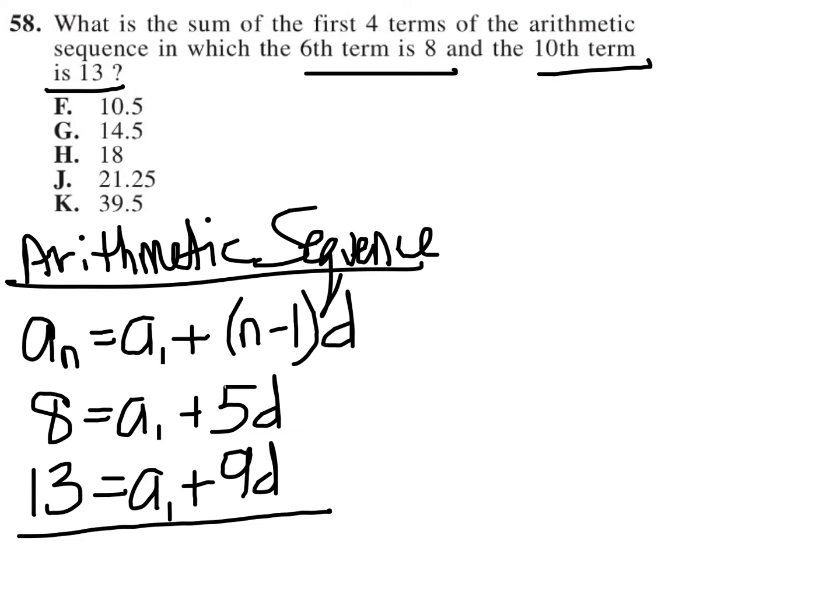Now, since I have two equations with two unknowns—there's a_1 and d in both equations which I don't know—I can use elimination. So I can subtract the second equation from the first equation. And by doing so, I get 8 minus 13, which is negative 5.